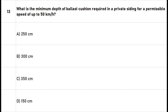Question 13: What is the minimum depth of ballast cushion required in a private siding for a permissible speed of up to 50 kilometers per hour? A. 250 mm. B. 300 mm. C. 350 mm. D. 150 mm. The right answer is option B: 300 mm.